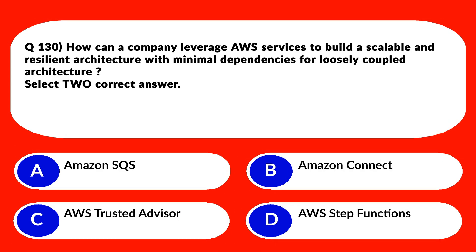This question requires selecting two correct answers — always read carefully whether one or two answers are needed, otherwise you might leave one out. There's no negative marking, so always attempt a guess. Option B, Amazon Connect, provides cloud-based contact center solutions and does not directly contribute to a loosely coupled architecture. Option C, AWS Trusted Advisor, is like a personal assistant guiding best practices in AWS but has nothing to do with loosely coupled architecture.